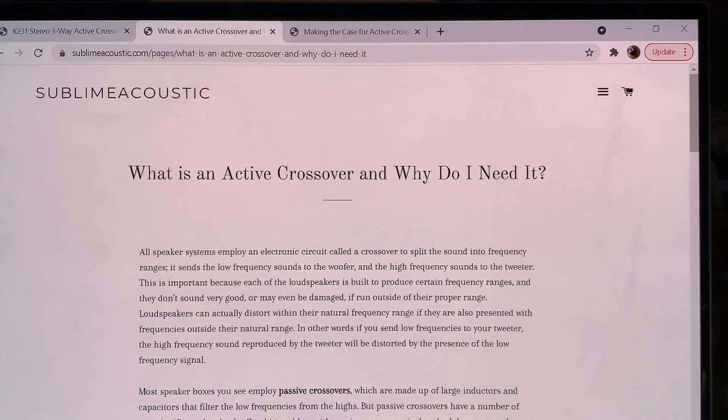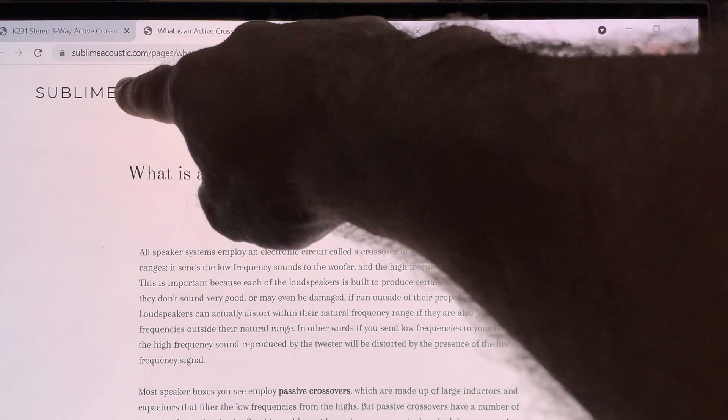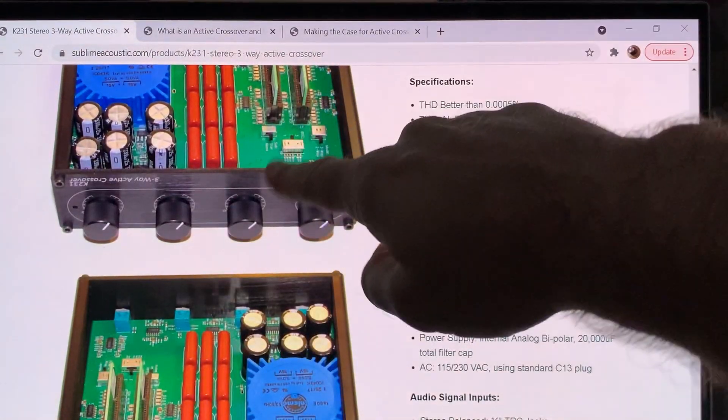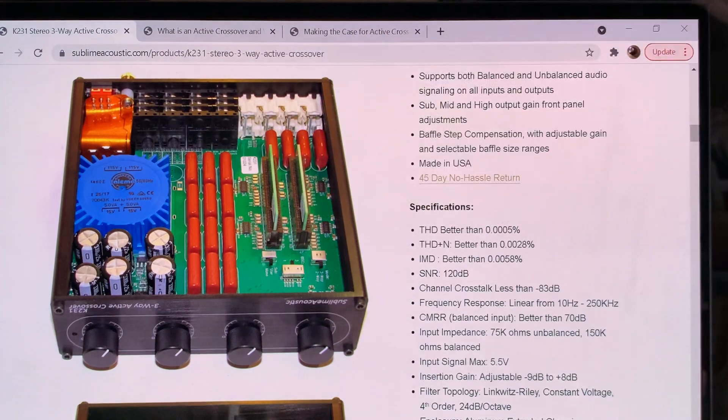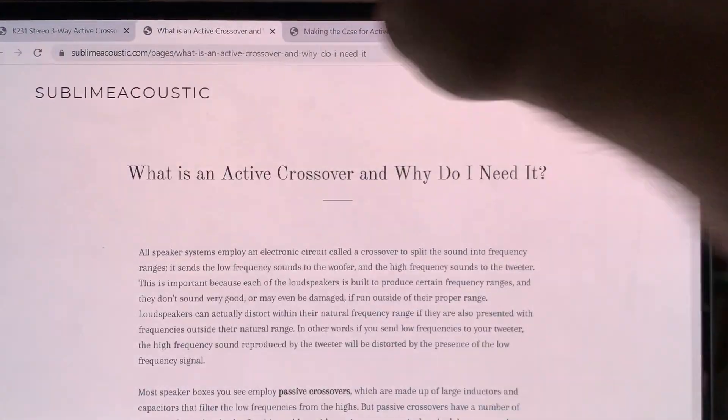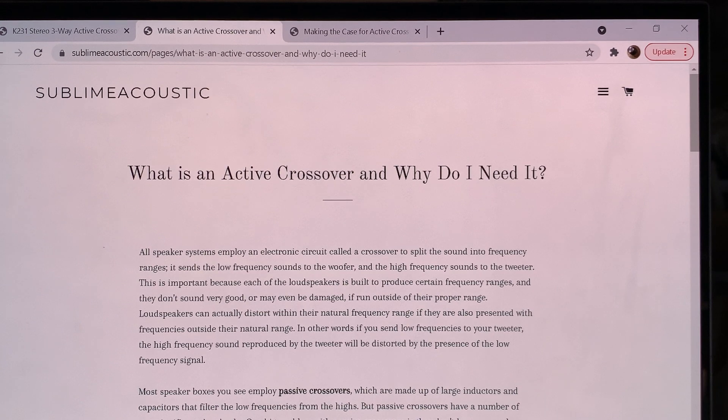Hi everyone, we are continuing our active versus passive crossover video series. I think it will be probably a three-part series, and I'm doing this as a request to give my ideas on specifically the Sublime Acoustic Crossover, which my buddy is interested in it.